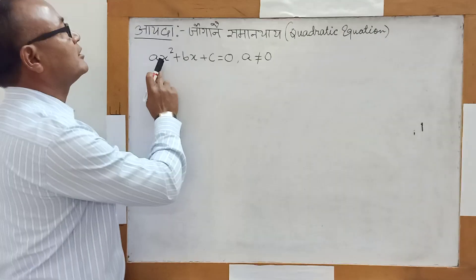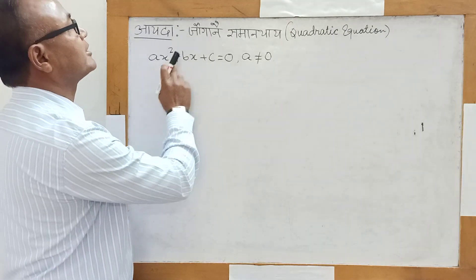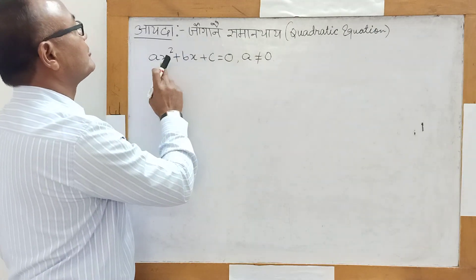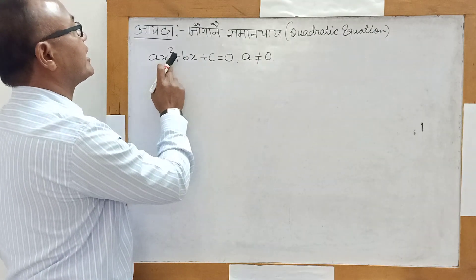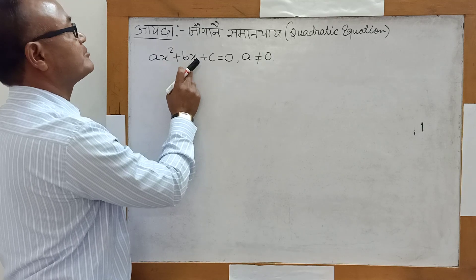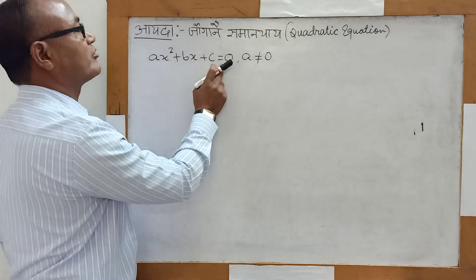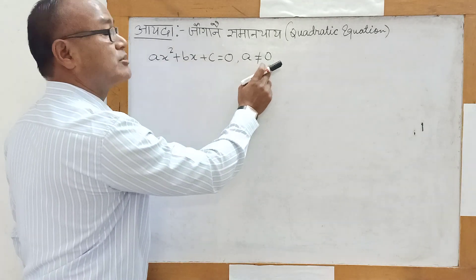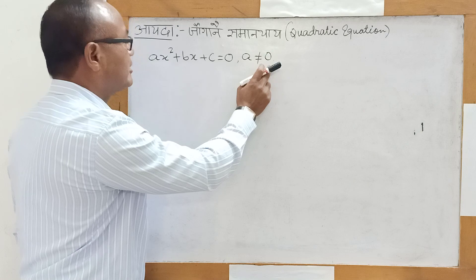The problem is: a squared plus bx plus c equals zero.